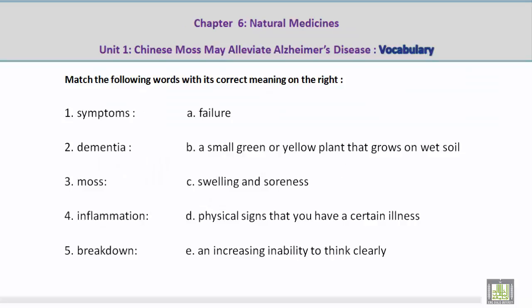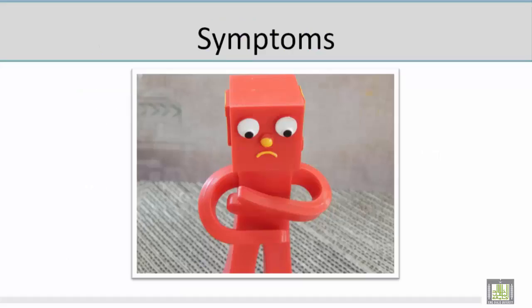Match the following words with its correct meaning on the right. Number 1: Symptoms. Mohamed, please give us the correct meaning on the right. D — Physical signs that you have a certain illness. Now let's take a look at a picture related to the vocabulary word 'symptoms.' Mohamed, could you please talk about this? In this picture I see he's holding his stomach and he's ill — a symptom of illness, a physical sign that you have a certain illness.